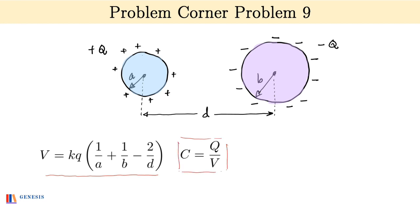And substituting the value of V and simplifying a little bit will get C nearly as 4 by epsilon naught divided by 1 by A plus 1 by B minus 2 by D. That gives us the final answer.